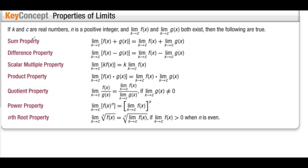Properties of limits. The sum property: the limit as x approaches c of f(x) plus g(x) — if you take the limit of a sum, you can take the sum of the limits. That works with subtraction as well. The scalar multiple property: if you're multiplying a function times k and taking the limit, you can pull the k out front. The product property: the limit of a product can be the product of the limits. Same with division. The power property: the limit as x approaches c of [f(x)]^n equals [the limit]^n. The same thing works with square roots — you can bring the limit inside and take the root later.